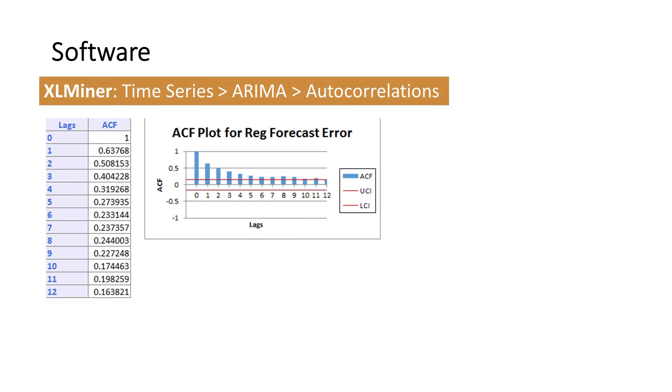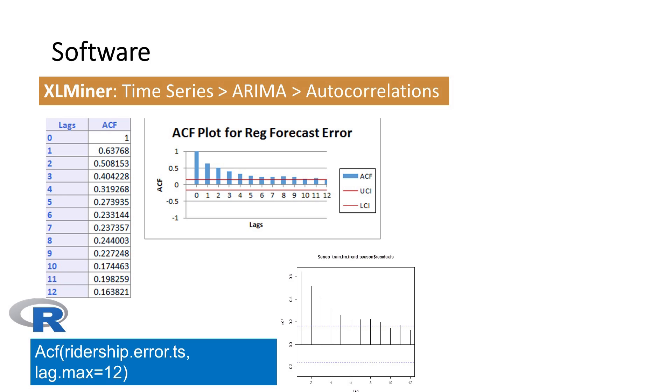With proper software, we don't need to compute autocorrelations manually. For example, in XLMiner, we can get a table and bar chart displaying the autocorrelations for lag 0 all the way to the largest lag specified by the user. Here, we see an example of autocorrelations until lag 12. With R, we can obtain the same result by using the ACF function. ACF stands for autocorrelation function.